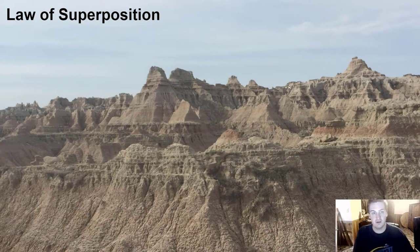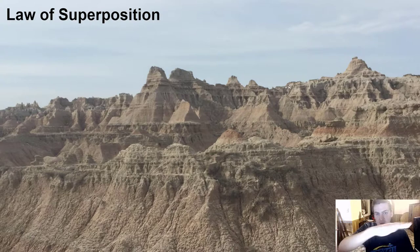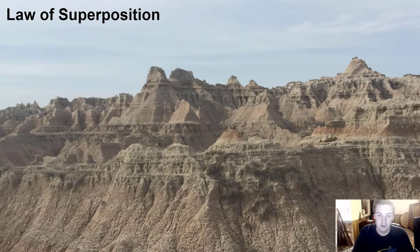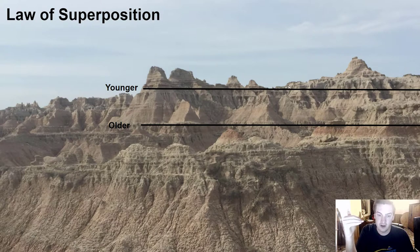The law of superposition is a really important one and it's actually a pretty easy principle. This is a picture I took of the Badlands in South Dakota, and you can see in this rock there are several layers as you work your way up. As rocks are deposited, they're going to be deposited roughly flat and on top of each other, building up to form large sequences. Using the law of superposition, I can tell that a lower layer is older than a layer above it — the ones on top are younger, the ones on the bottom are older.